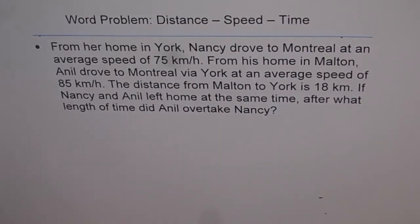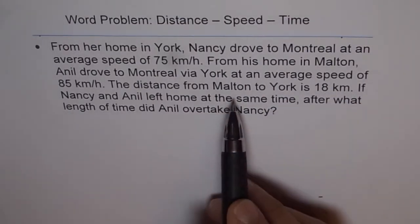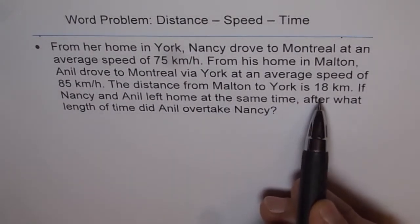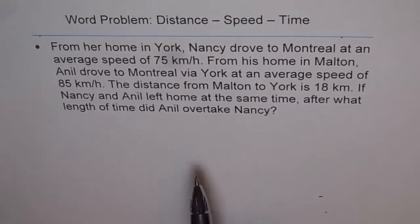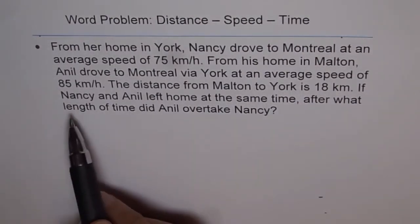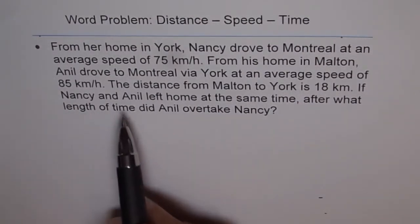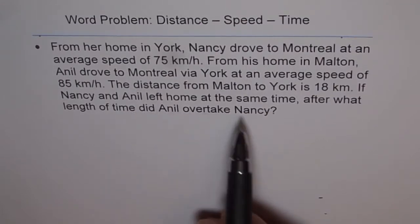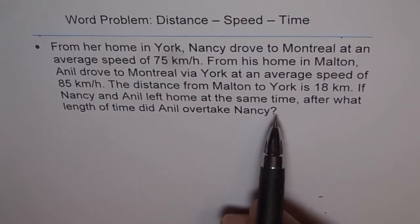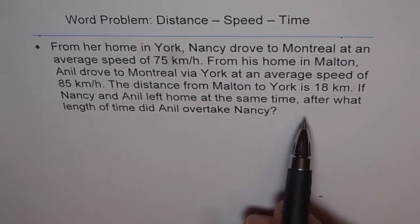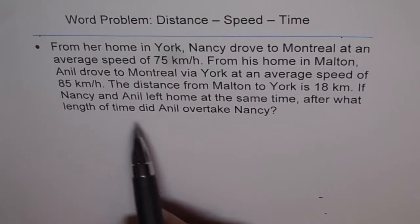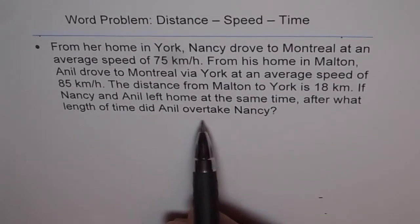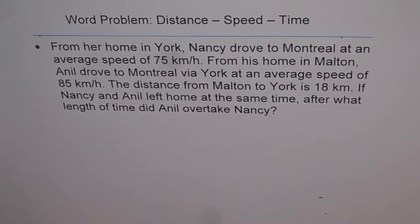The distance from Malton to York is 18 km. If Nancy and Anil left home at the same time, after what length of time did Anil overtake Nancy?